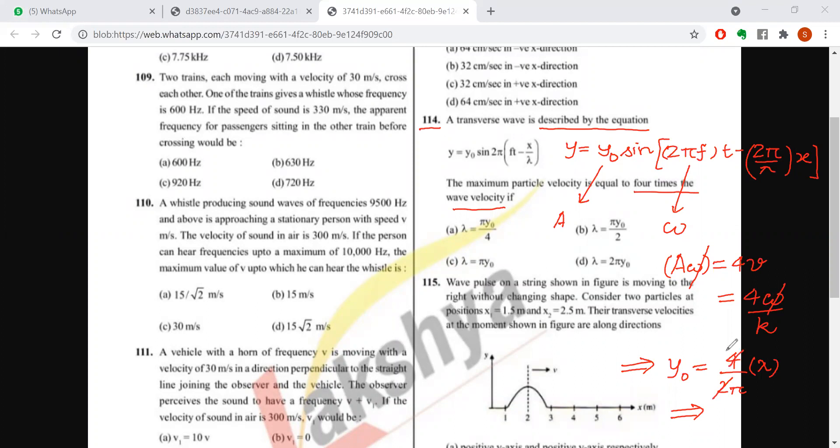Solve this and simplify it, take it to the other side. πy₀ cross multiply, πy₀/2 = λ. So B is our answer, understood?